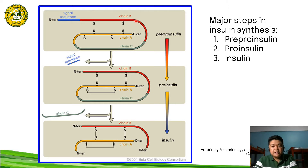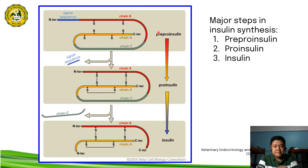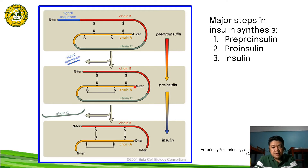The insulin mRNA is translated as a single-chain precursor called the preproinsulin, which is formed by the polyribosomes in the ER. The signal peptide will direct the preproinsulin to go into the lumen of the ER to form the proinsulin. When preproinsulin enters the ER, the signal peptide will be cleaved and removed from the molecule to form the proinsulin.